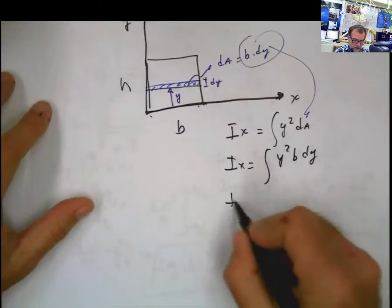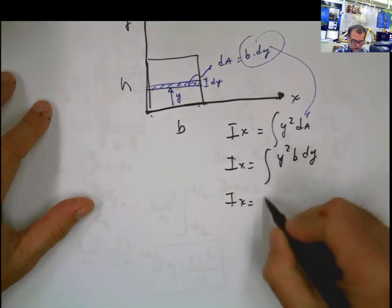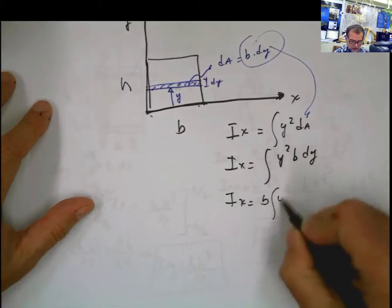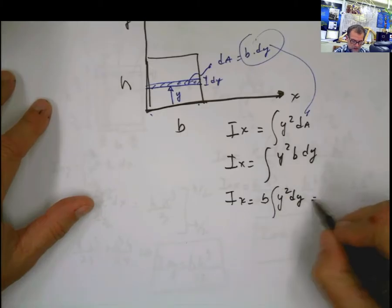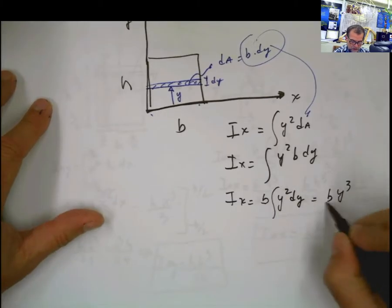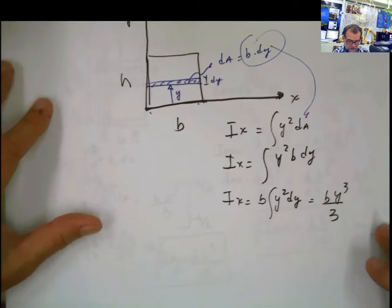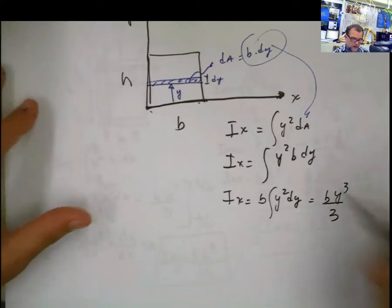So we do the integration of this. b goes outside the integral, the integral of b y squared dy. And this is going to be b y to the third divided by 3. But now the difference is the limits. Where are my limits?